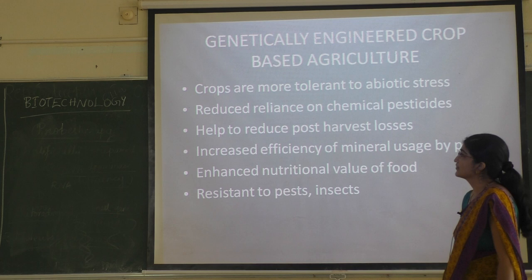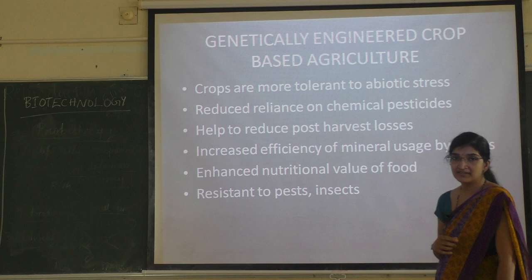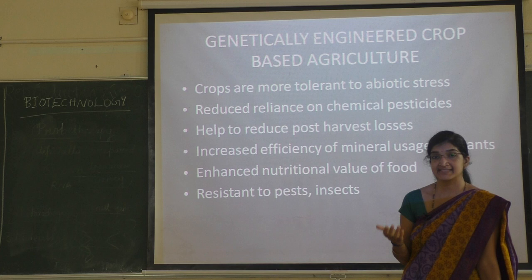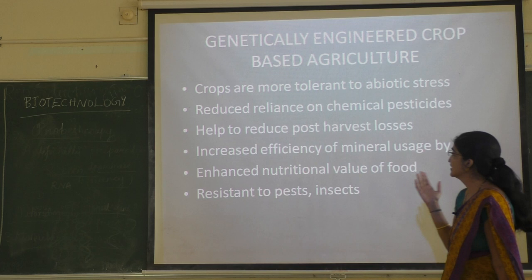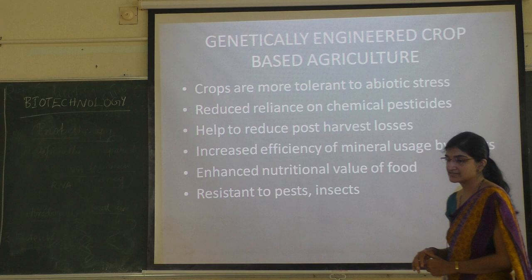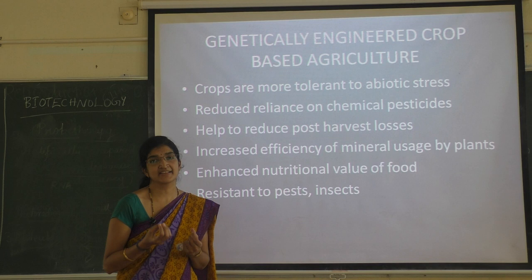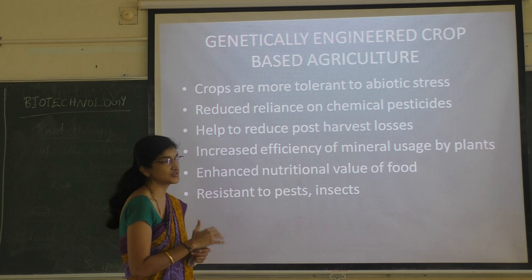Genetically engineered crop-based agriculture has several benefits: crops are more tolerant to abiotic stress, there is reduced reliance on chemical pesticides since the plants themselves produce resistance against pests, pathogens, and insects. It helps to reduce post-harvest losses. The yield is more compared to traditional methods, and the crops are free from diseases, so the losses are less.